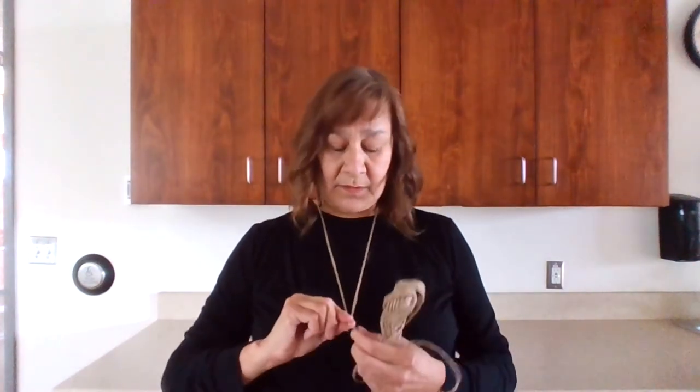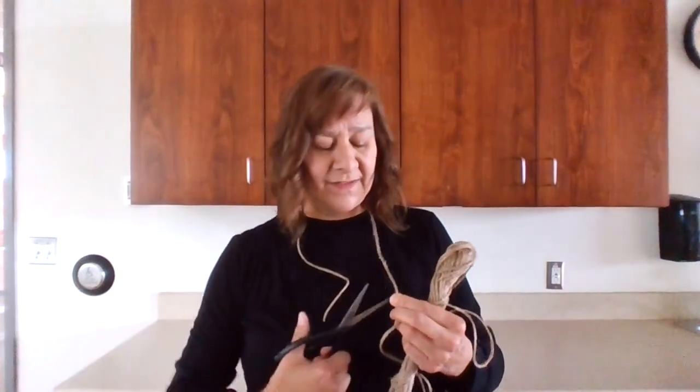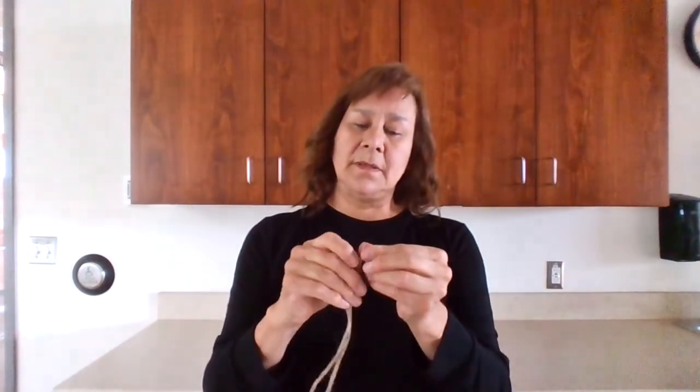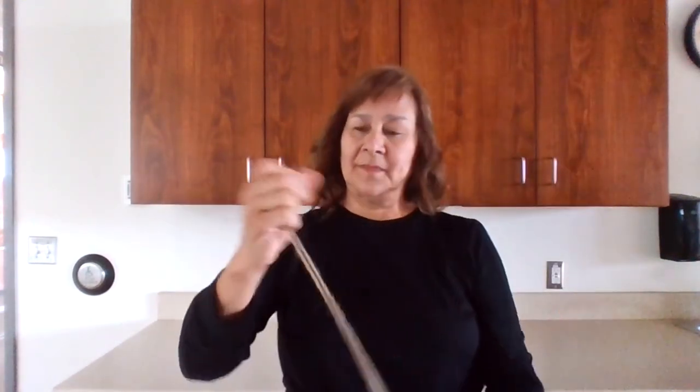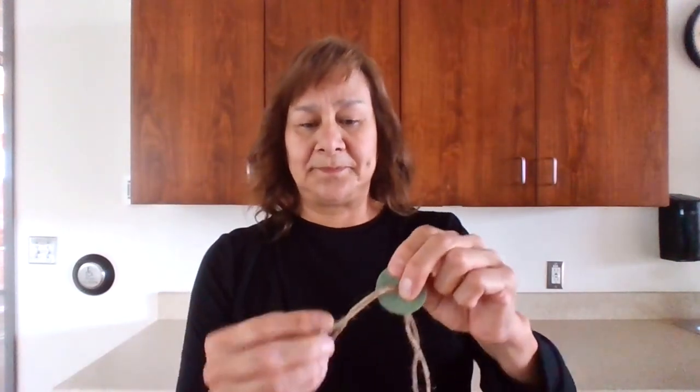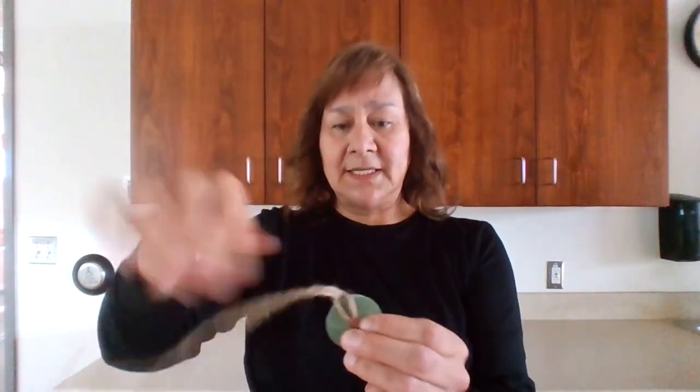So you're going to take your jute. And what I like to do is just wrap it around to try to determine the length, or approximately. And then cut it just a little bit longer than where you want it. And you take your jute, fold it in half, like so. And we're going to thread it right through the center of the washer, just like that. You see? And then pull that through here. Make it nice and tight. So there we have it.